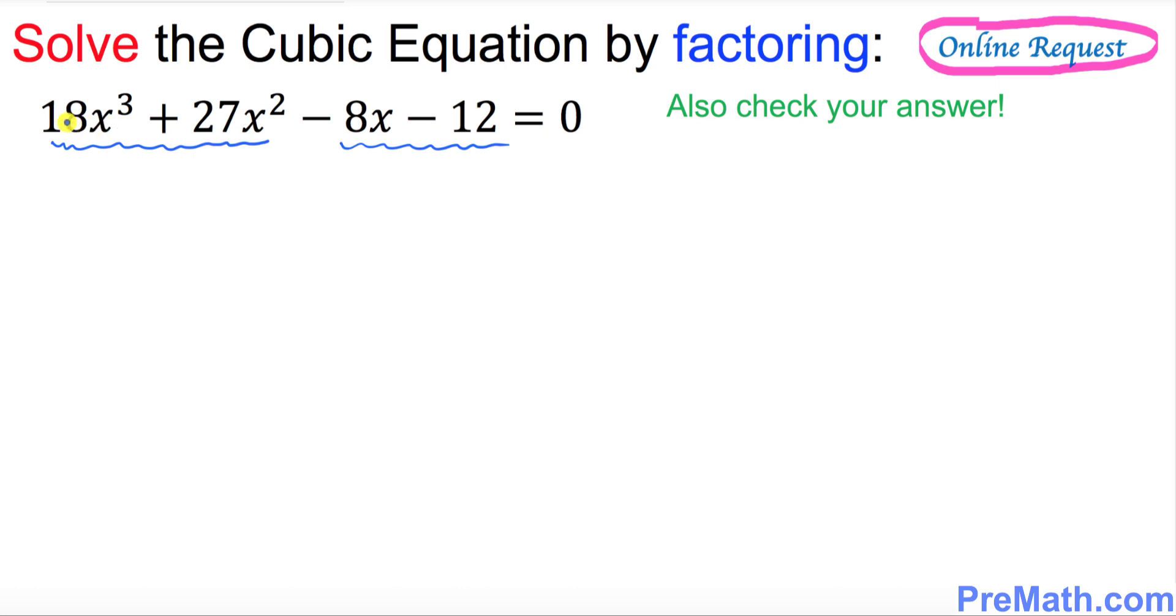Find the GCF, whatever is in common between these first two terms. As you can see, the common among these two is 9x². Once you factor that one out, we can have in parentheses 2x + 3. Likewise, in the second pair, these two terms over here, we have -4 in common. So bring -4 outside, so we are left with 2x + 3, and equal to 0.